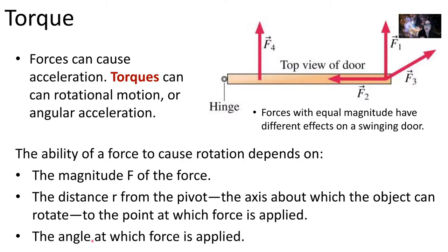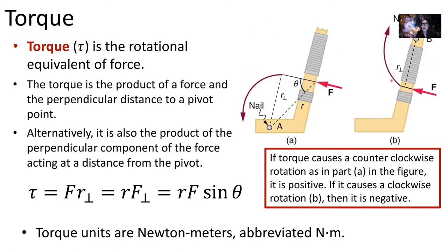This also depends on the angle at which the force is applied. Here we're looking at a door from above, attached to a pivot point — a hinge. Forces with equal magnitude can have different effects on a swinging door depending on the distance those forces are from the pivot point and the angle at which they are applied.